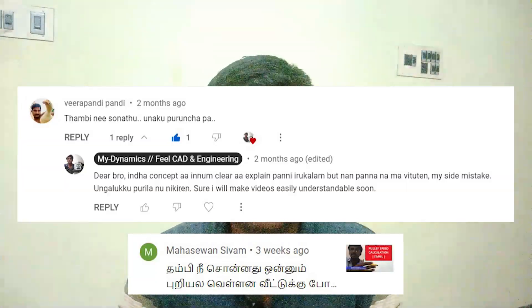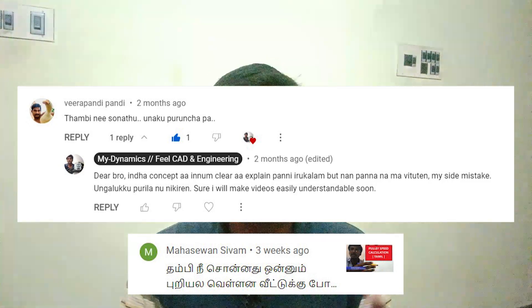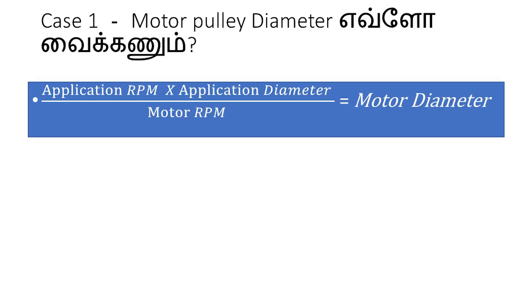If we multiply the RPM and multiply the diameter of the driving pulley, then we divide by the diameter of the motor to get the driven speed.